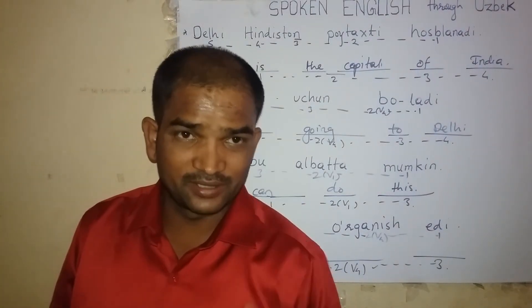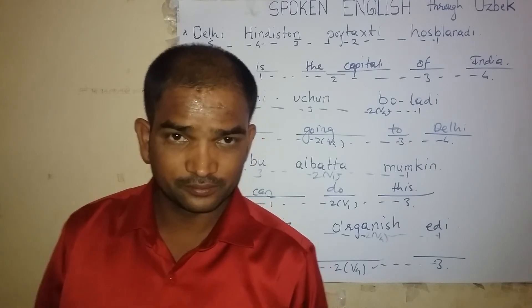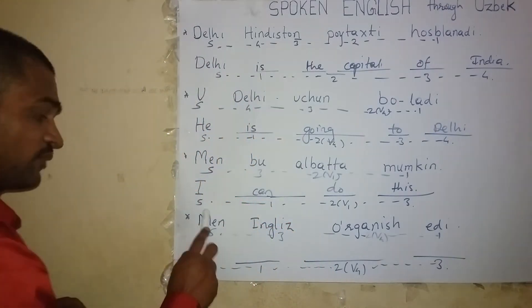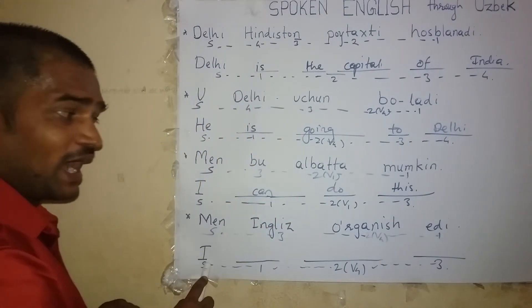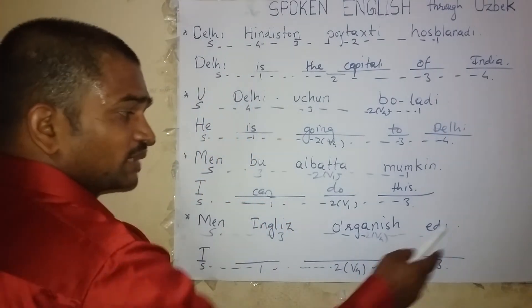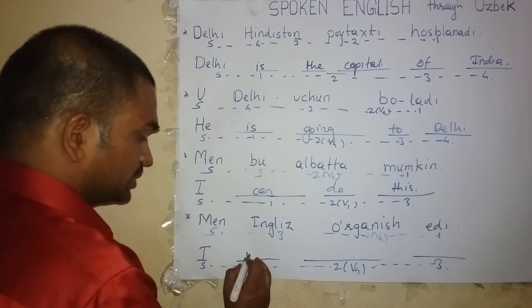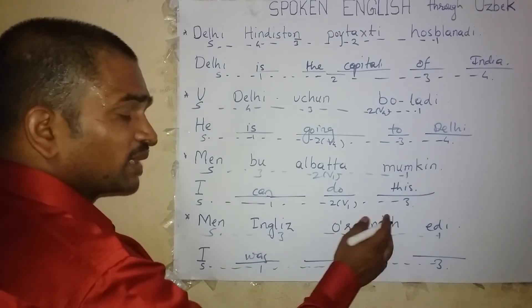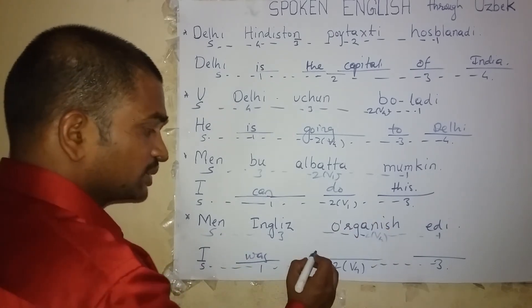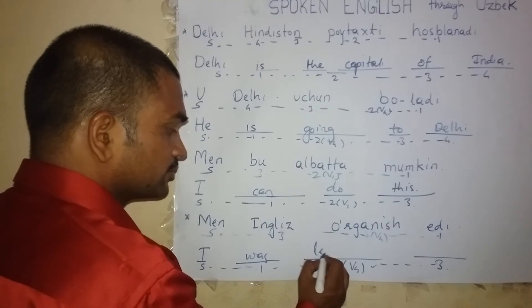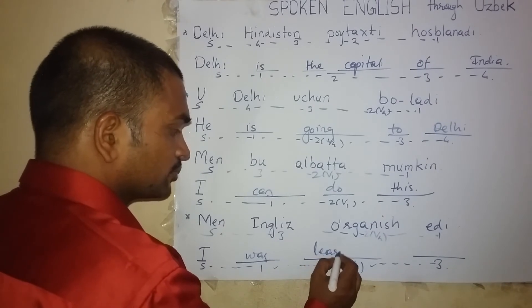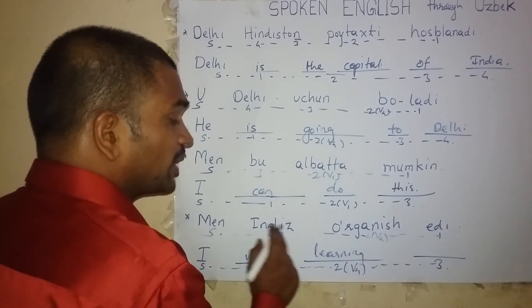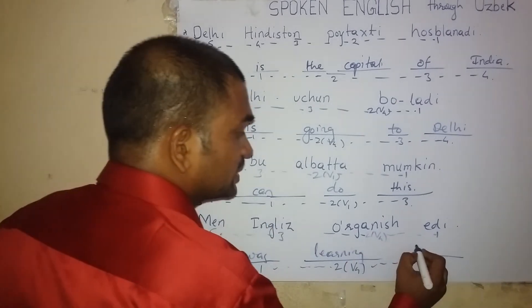The word for 'men' — I. The word for 'edi' — was. The word for 'organic' — learning. The word for 'English' — English. I was learning English.